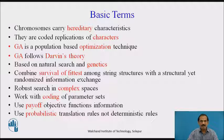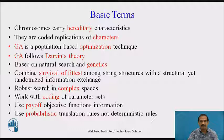GA follows biological principles of Darwin's theory based on natural search and genetics. It combines the survival of the fittest among string structures with a structured yet randomized information exchange. It is a robust search in a complex space and works with coding of parameter sets. We use payoff objective functions to determine whether a chromosome is fit for the next generation, and a probabilistic translation rule to determine whether a particular chromosome is good or bad.